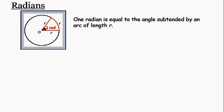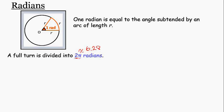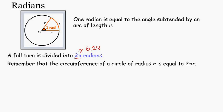In a complete circle, I have 2π radians, that's approximately 6.28 radians. But we leave it in terms of π so that it is not rounded. You'll probably remember that the circumference of a circle of radius r is equal to 2π times the radius.